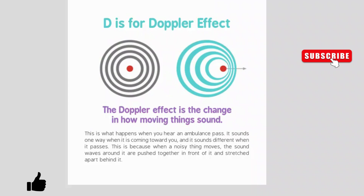D is for Doppler effect. The Doppler effect is the change in how moving things sound. This is what happens when you hear an ambulance pass — it sounds one way when it's coming towards you, and it sounds different when it passes. This is because when a noisy thing moves, the sound waves around it are pushed together in front of it and stretched apart behind it.